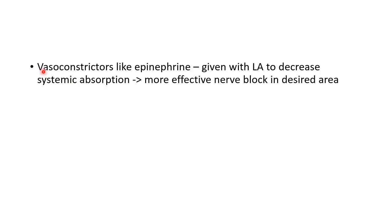One important point to remember is that vasoconstrictors like epinephrine are given along with local anaesthetic agents to decrease systemic absorption. This leads to more effective nerve block in the desired area and also less systemic side effects.